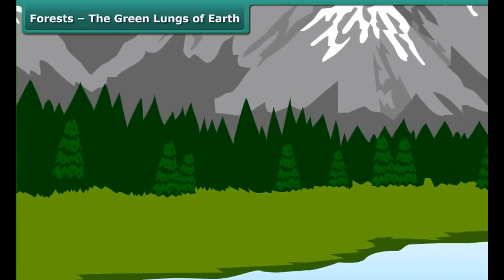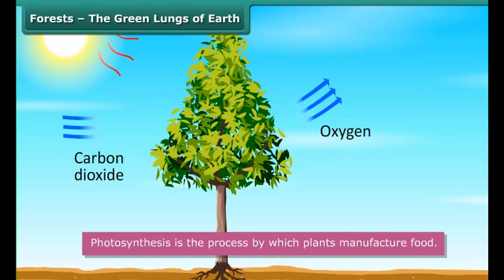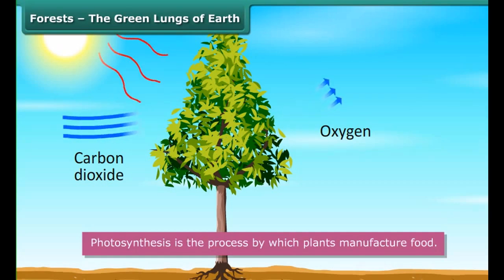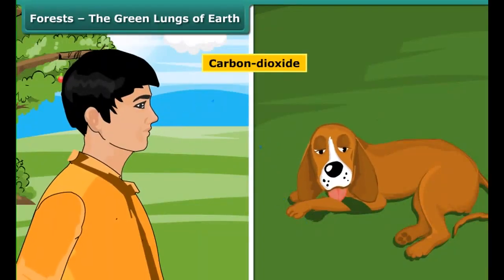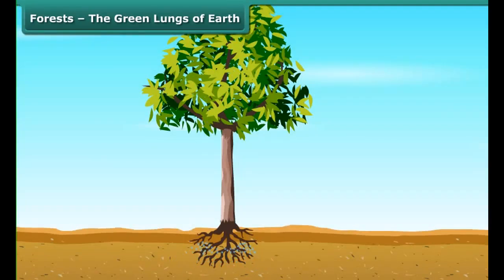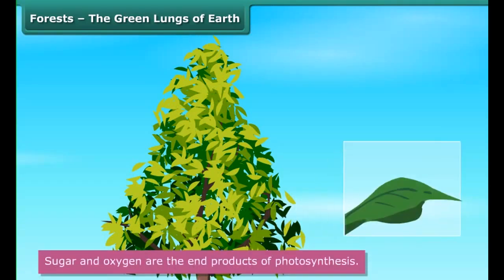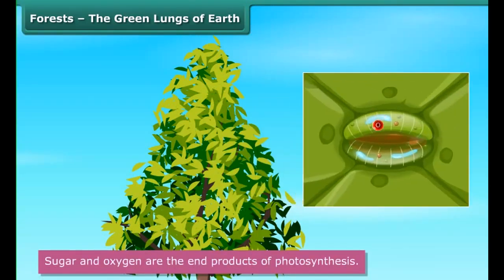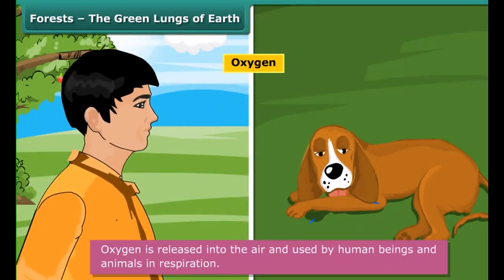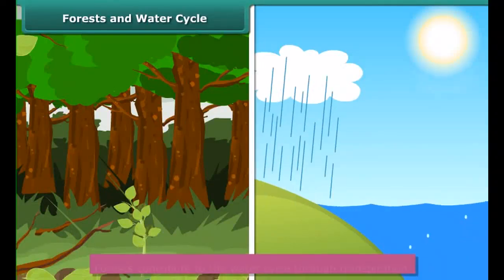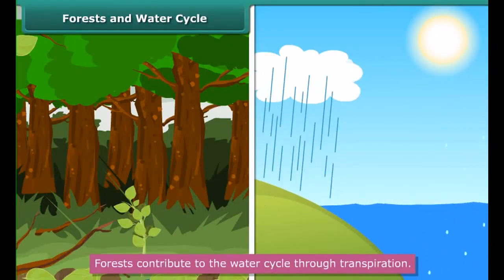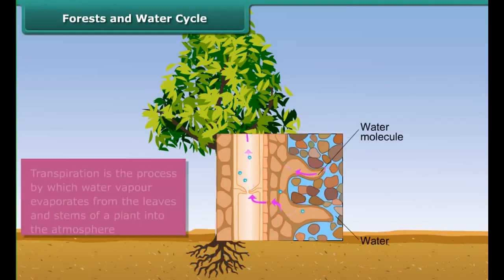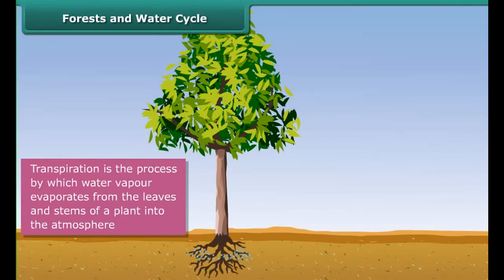Forests support many such food chains, which are interlinked to one another to form a food web. Forests maintain the balance of oxygen and carbon dioxide in the atmosphere through photosynthesis. Photosynthesis is the process by which plants manufacture food. Plant leaves use light from the sun to synthesize food from carbon dioxide and water. Carbon dioxide is released by human beings and animals; water is absorbed from the soil by plants. Sugar and oxygen are the end products of photosynthesis. Oxygen is released into the air and used by human beings and animals in respiration.